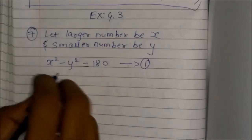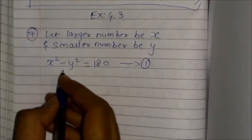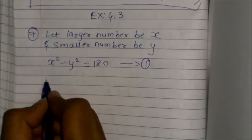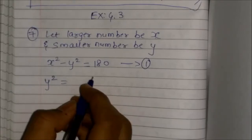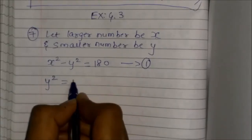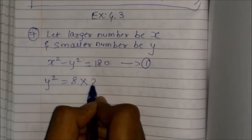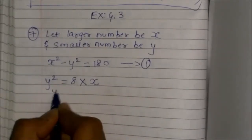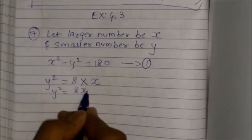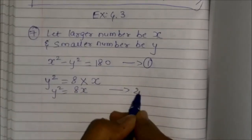The second sentence states: the square of the smaller number is 8 times the larger number. The smaller number is y and the larger number is x. So y² is equal to 8x. This is equation 2.